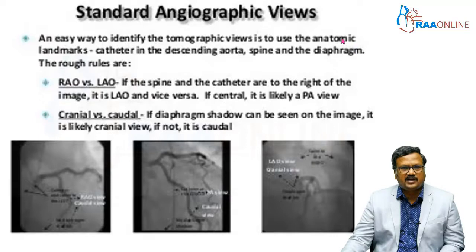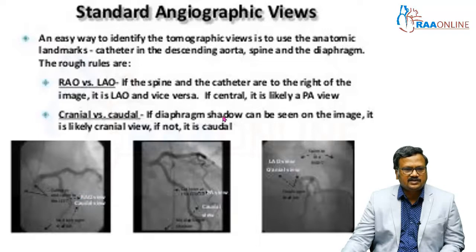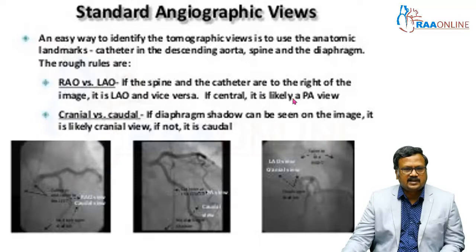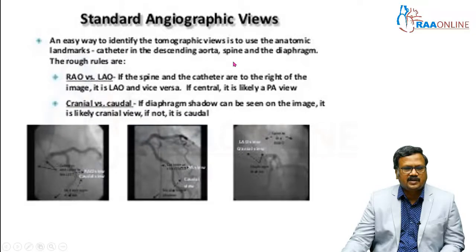The catheter in the descending aorta, the spine, and the diaphragm will give you roughly what view has been taken. If the diaphragm is seen in the image, most likely it is cranial and not caudal — in LAO cranial or AP cranial you can appreciate the diaphragm. To differentiate RAO and LAO: if the spine and catheter are to the right side of the image it is LAO; if to the left side it is RAO; and if at the center it is PA view.